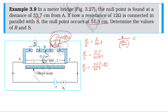For the second balancing length of 51.9: R divided by the parallel combination equals 51.9 divided by 100 minus 51.9, which is 51.9 divided by 48.1.